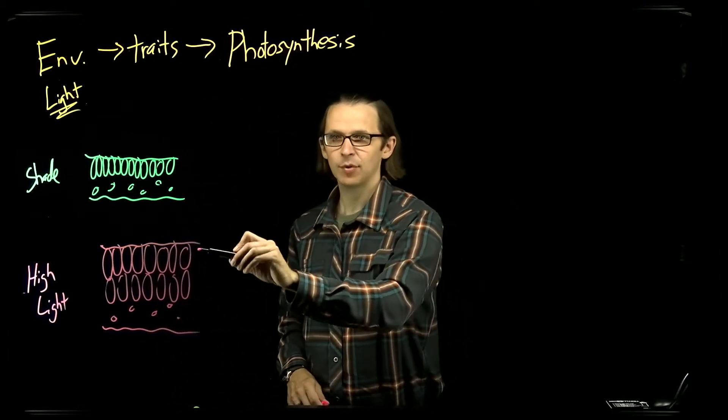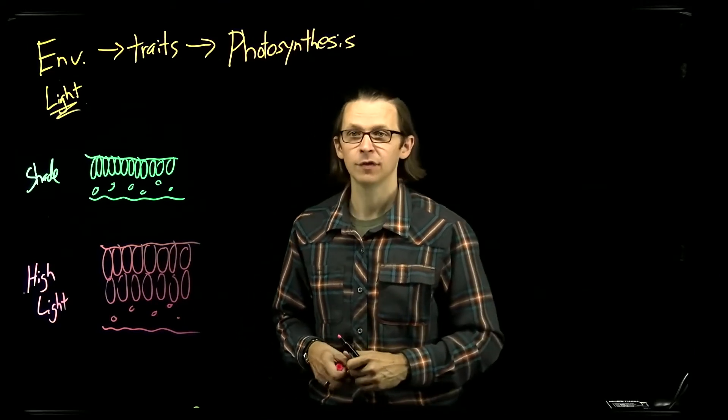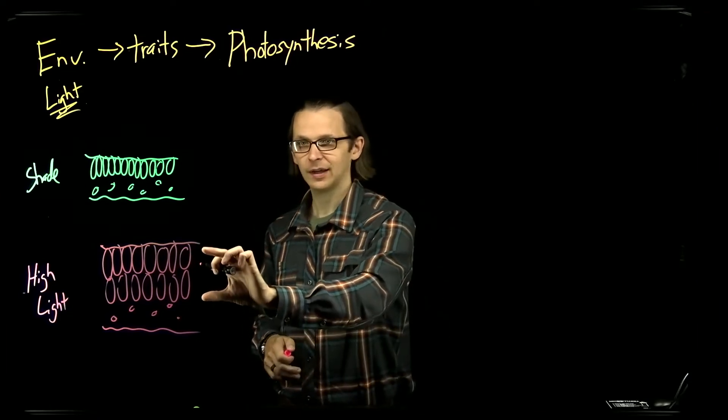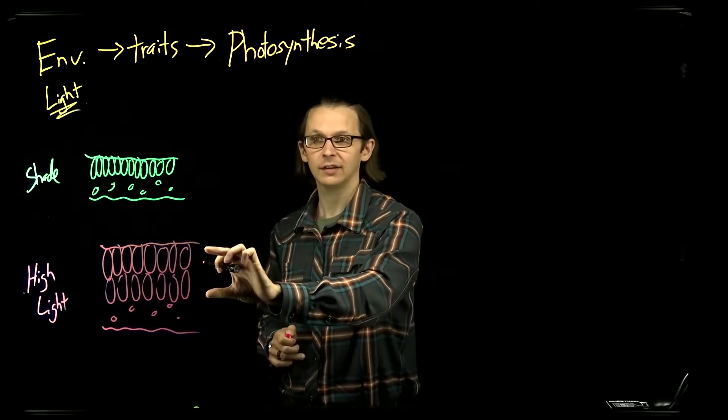These palisade parenchyma are packed full of photosynthetic proteins and chloroplasts that are expensive for the tree to provision into the leaf, but that high expensive amount of photosynthetic machinery can achieve high photosynthetic rates under high light conditions.